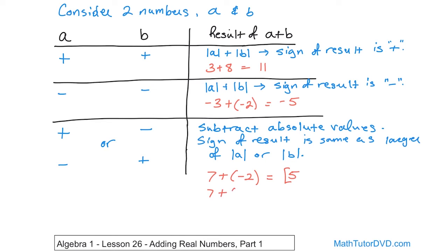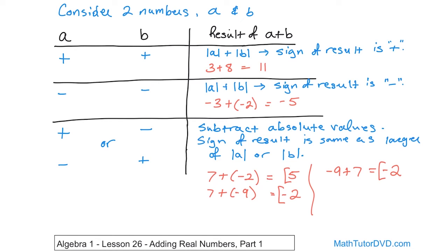Quick examples. What if you have 7 plus negative 9? These are mixed signs, so you just subtract them — take the bigger number: 9 minus 7 equals 2. Now decide the sign: the absolute value of negative 9 is 9, which is larger, so the answer is negative 2. What if you have negative 9 plus 7? This is the exact same problem with the numbers flipped. You do the same thing: subtract, getting 9 minus 7 equals 2, and the larger absolute value belongs to negative 9, so the answer is again negative 2.